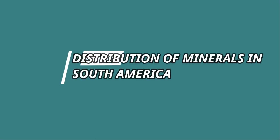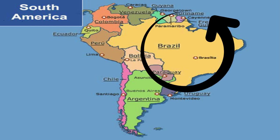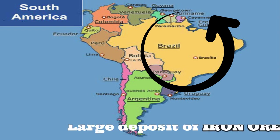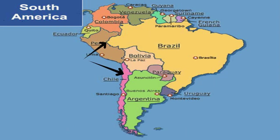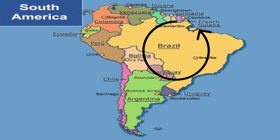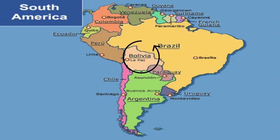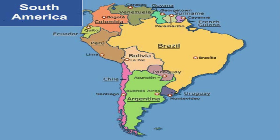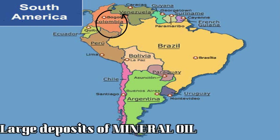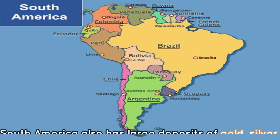Now let us know about the distribution of minerals in South America. In Brazil, we find large deposits of iron ore. Chile and Peru have large deposits of copper. Brazil and Bolivia have large deposits of tin. Venezuela, Argentina, Chile, Peru, and Colombia have large deposits of mineral oil. South America also has large deposits of gold,